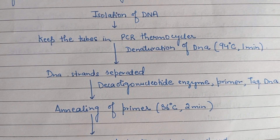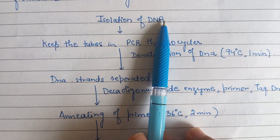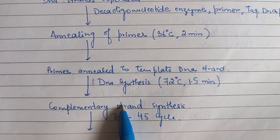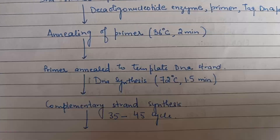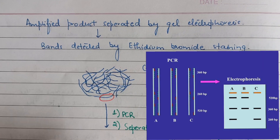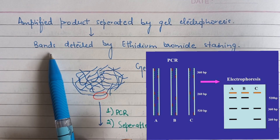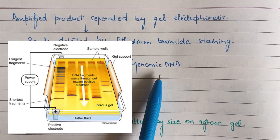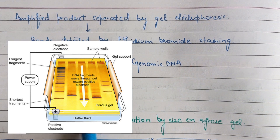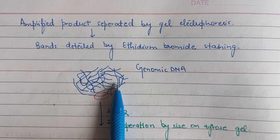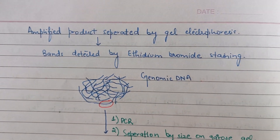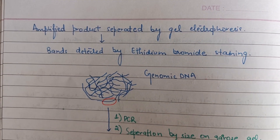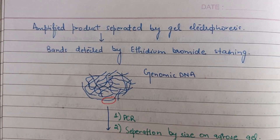Here we have a chart representing how RAPD is actually performed. First, isolation of DNA is done, then they are subjected to PCR, and after 30 to 45 cycles, the amplified product is separated by gel electrophoresis. The bands are detected using ethidium bromide, which is a stain added to visualize them. This is how we separate and detect the different bands of DNA through RAPD, using it to see the polymorphism between two different individuals.